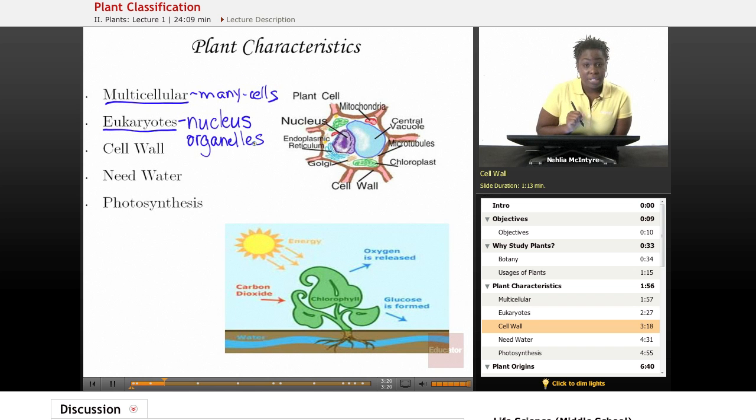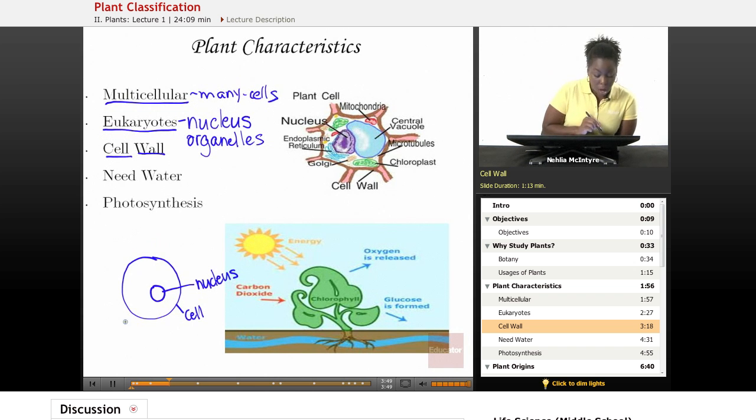The next plant characteristic that all plants share is they all have what we call a cell wall. Now, I'm going to draw a very general, simple cell that is just a circle, and inside of that circle is going to be our nucleus. So this circle would be the cell, and this circle here would be the nucleus. And for the most part, all eukaryotic cells look just like this. They have the nucleus. They have what we call the cell membrane, which is basically the outer layer of the cell. And inside, they could have different organelles that do different things.